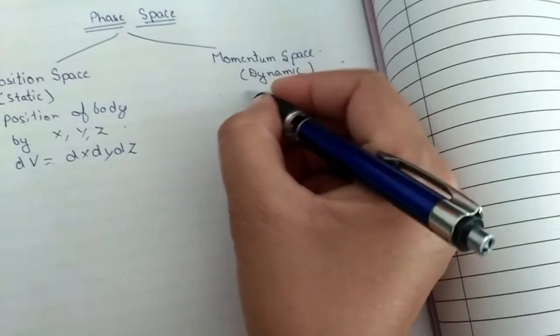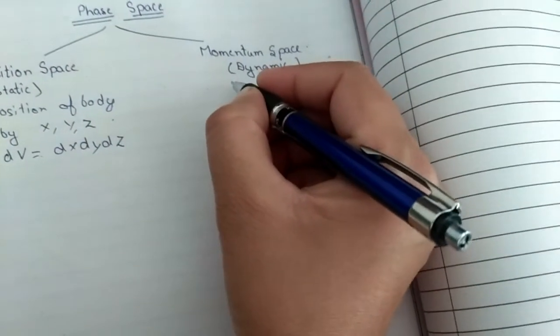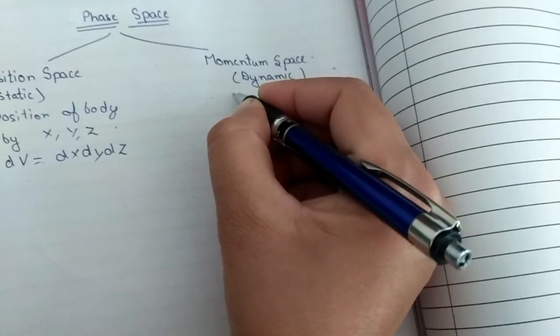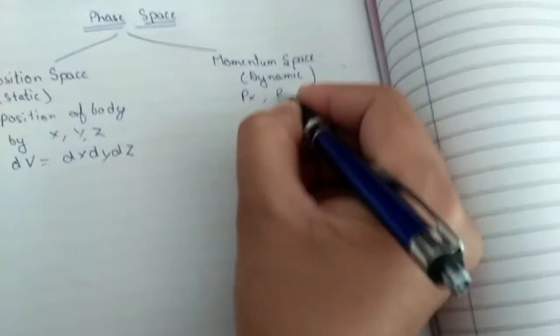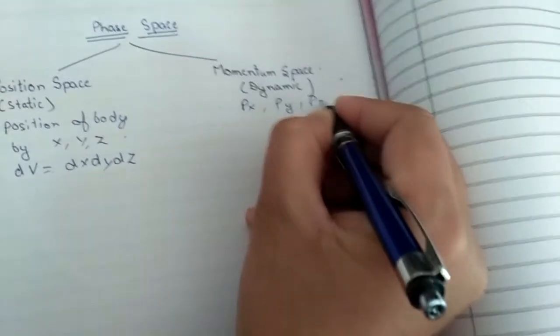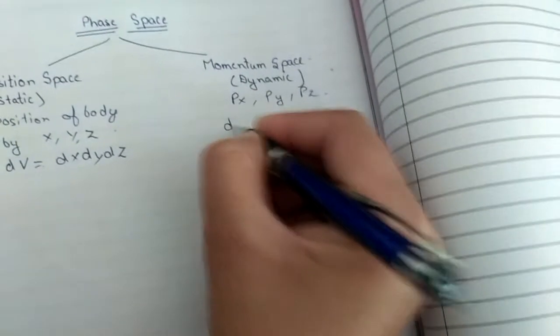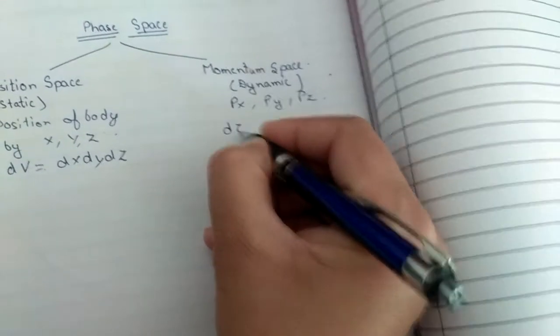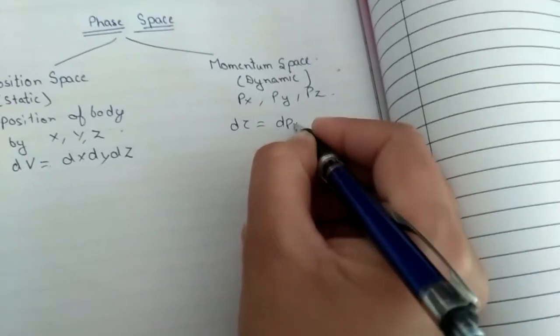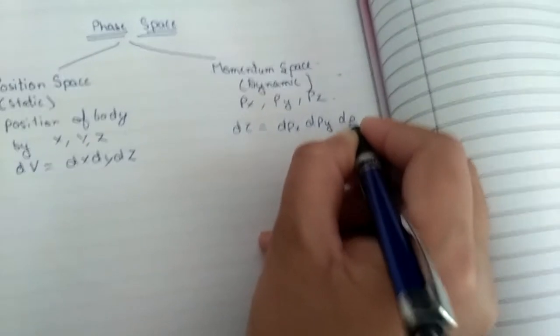In momentum space, it is a dynamic space so it relates with the momentum of x axis, momentum of y axis and also momentum of z axis. Its volume is represented by dpx multiply dpy multiply dpz.